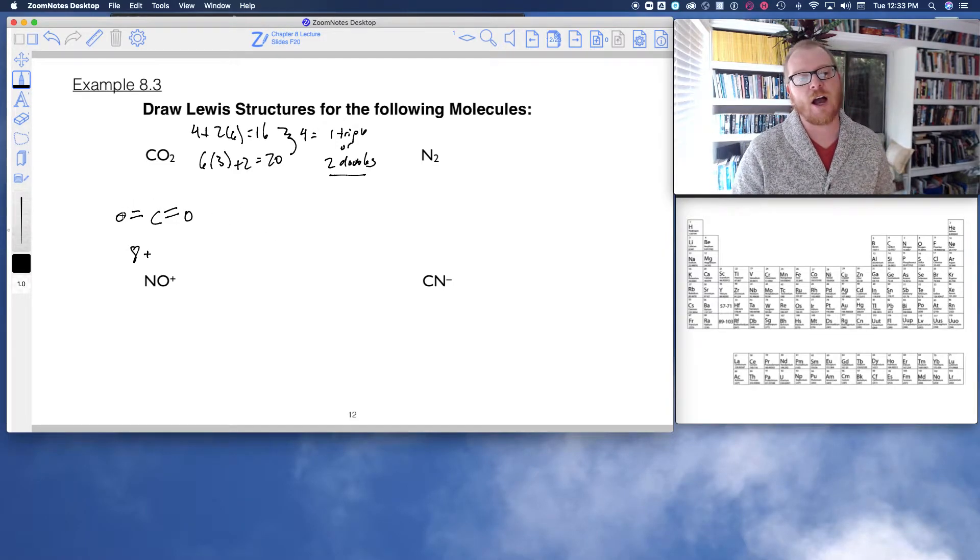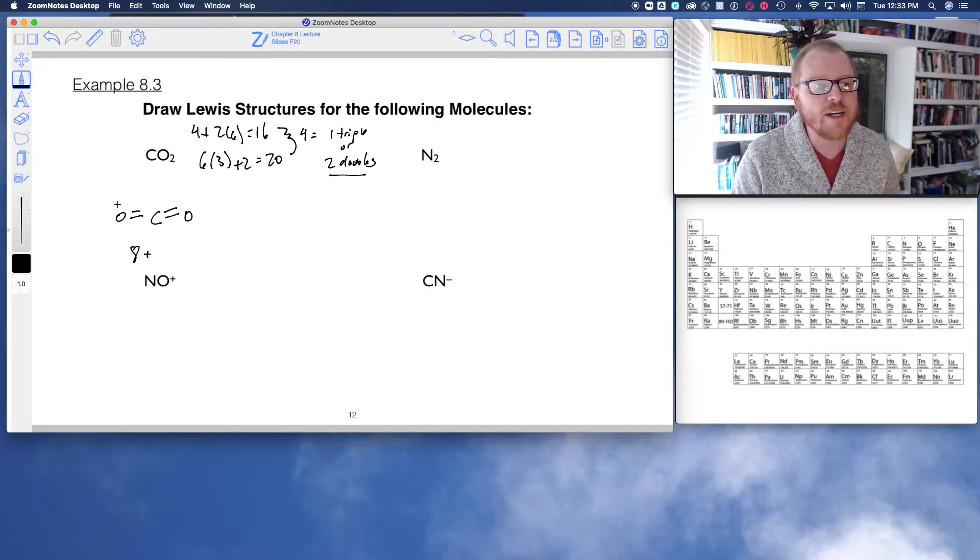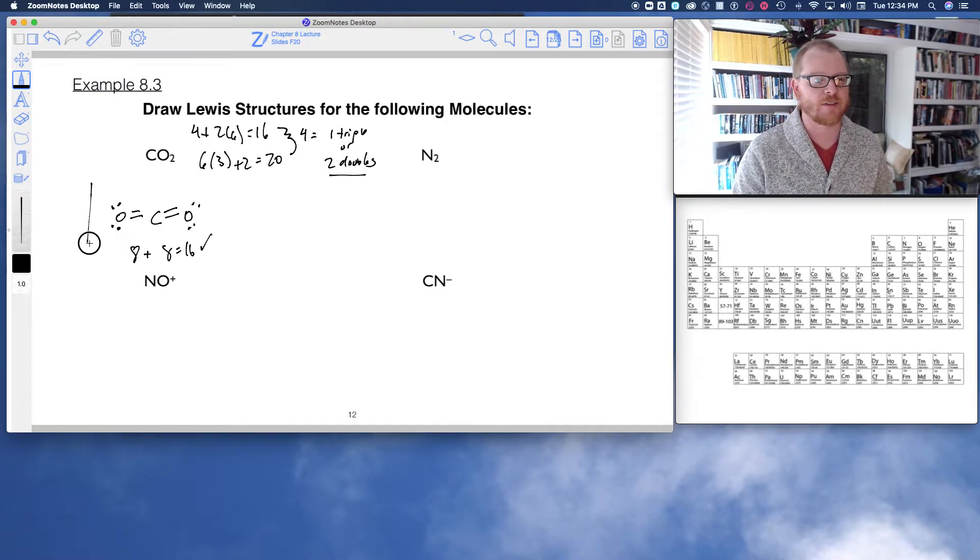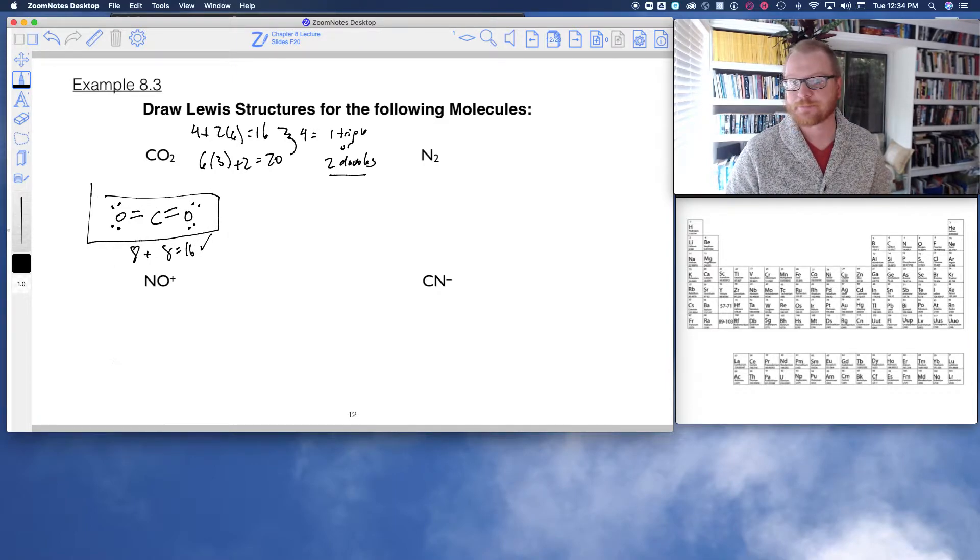But what about each oxygen? Well each oxygen is only surrounded by 2, 4. Even though they're sharing, and they're not sharing equally because oxygen is more electronegative than carbon. Even so, oxygen only has 4 electrons. So I need to put another 4 electrons, and we just kind of spread them around like that. So now this oxygen has 2, 4, 6, 8. This oxygen will have 2, 4, 6, 8. That gives me 8 and 8. 8 plus 8 equals 16. So I've used all 16 of my valence electrons. And here's my Lewis structure for carbon dioxide, 2 double bonds.